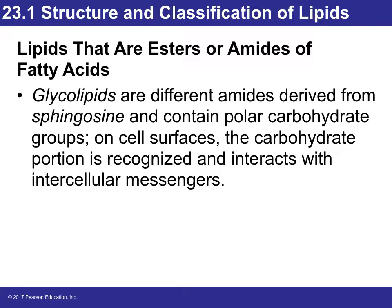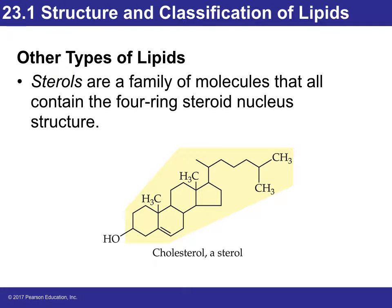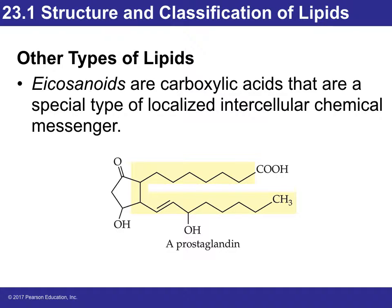Finally, the last types to discuss are the sterols — you've probably heard of those — this is an example, this is cholesterol. We also briefly talk about eicosanoids, which are carboxylic acids that are a special type of localized intercellular chemical messenger.